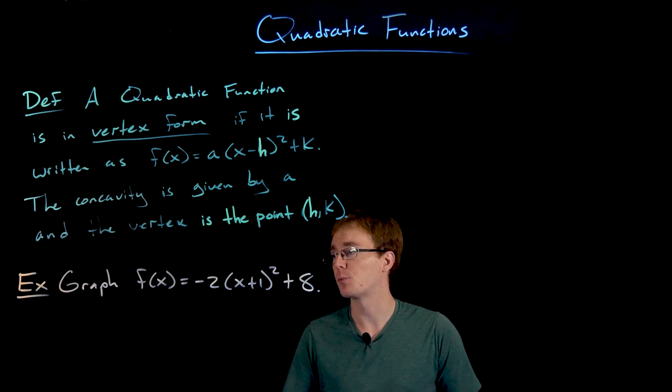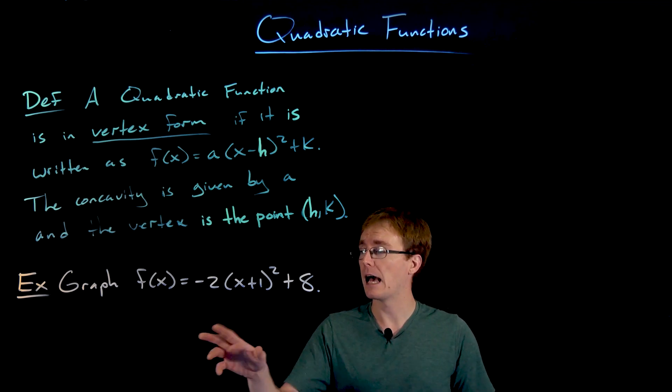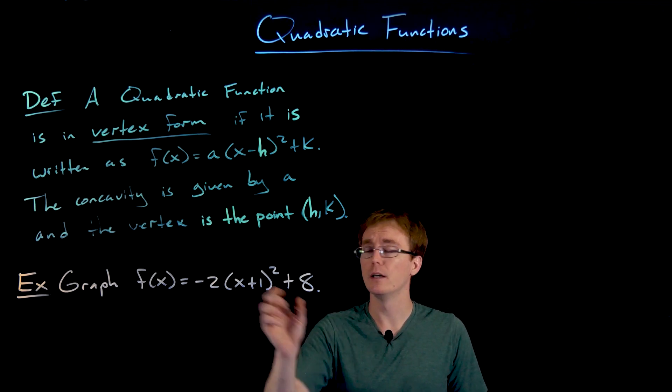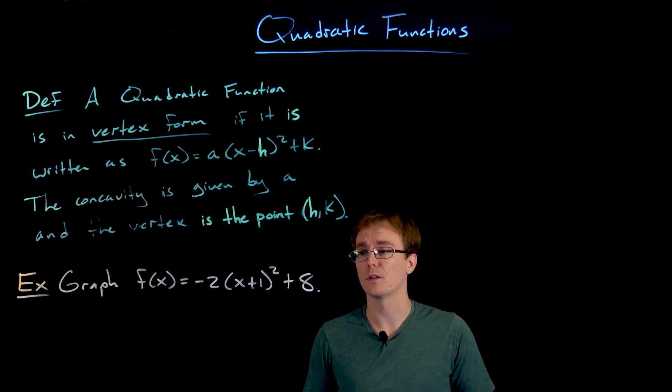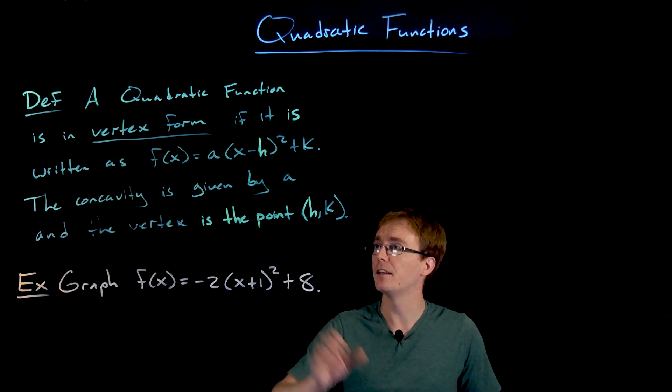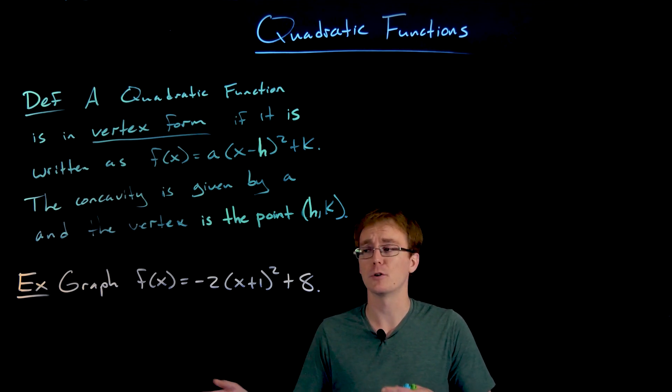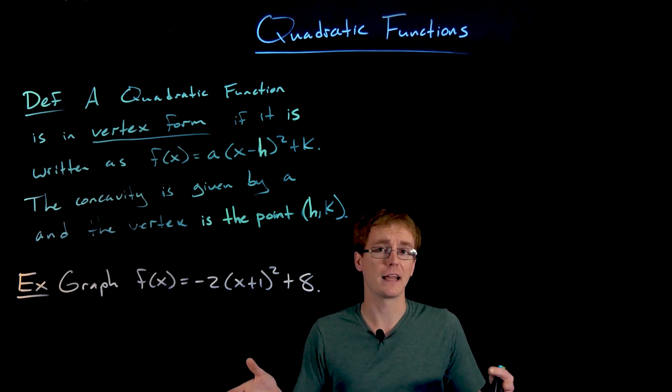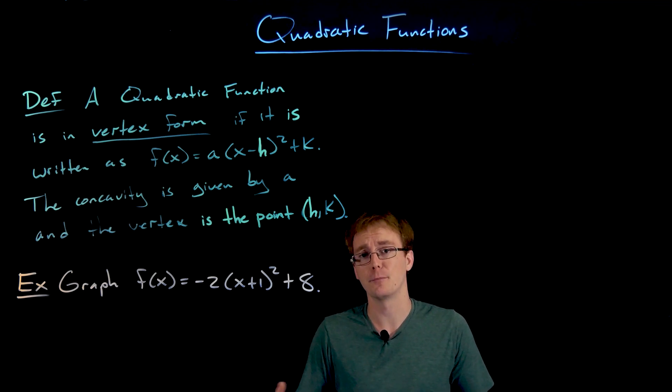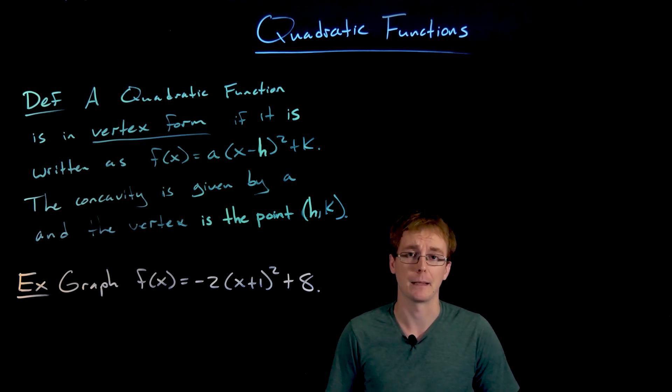In this example we are asked to graph the quadratic function f(x) = -2(x + 1)² + 8. This is already in our vertex form, so we could use our old approach: expand this function, do all the algebra, and write it in standard form and then graph it. That's adding in some extra steps.